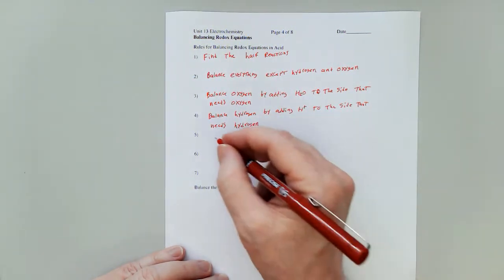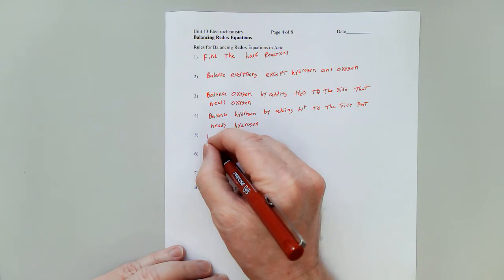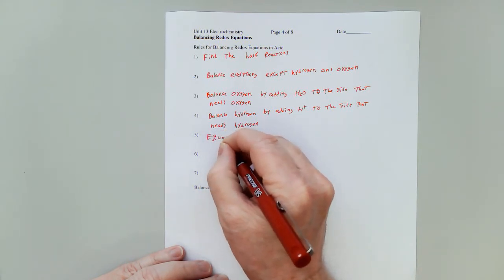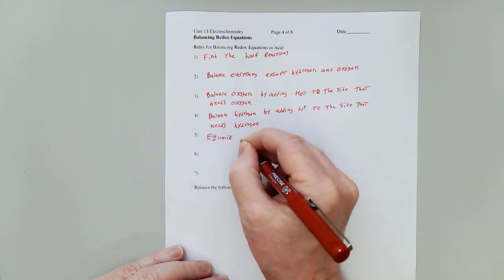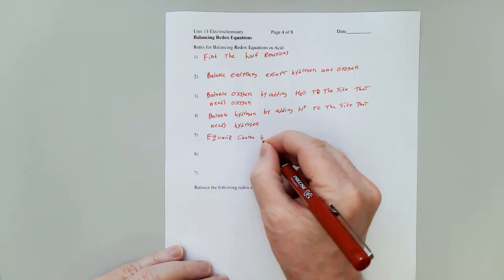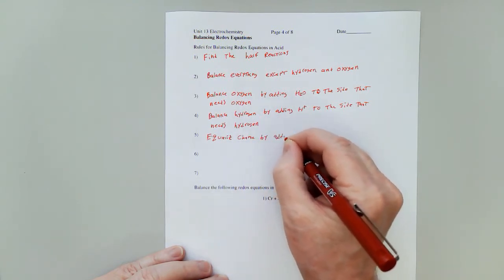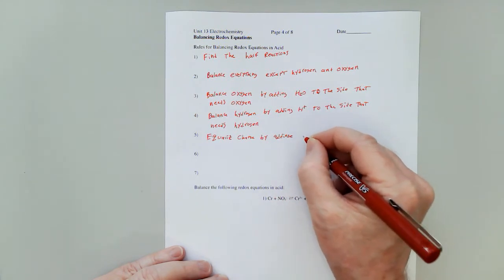All right. In step five, we will equalize charge by adding electrons.